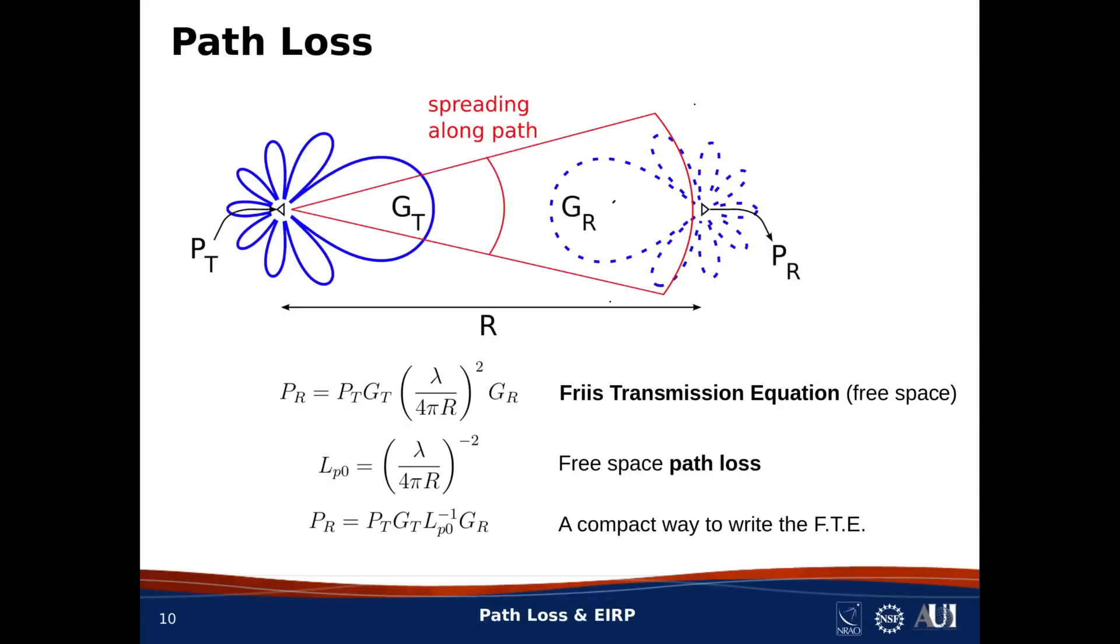So now we have a compact way of writing the Friis equation, and that's shown at the bottom of this slide. What the equation says is received power equals transmit power times the gain of the transmit antenna divided by path loss, and then multiplied by the gain of the receive antenna. Very simple.